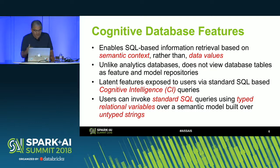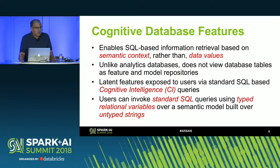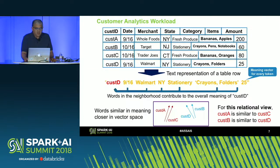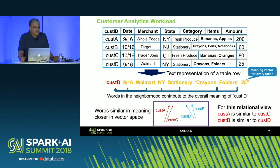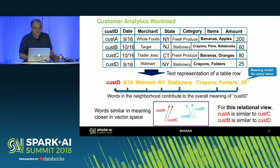These cognitive intelligence queries use typed relational variables as in standard SQL, but the model used is built on untyped strings generated by the textification process. Here is a concrete example: a very simple customer analytics database. A row is considered as a sentence and will have data of different types — customer A is a string, 916 can be a date, and there are items like crayons and folders, and numeric values.